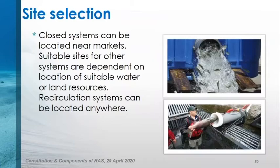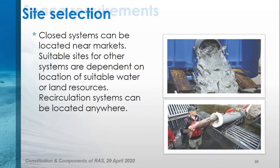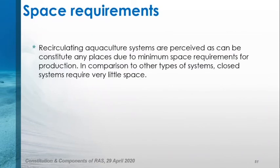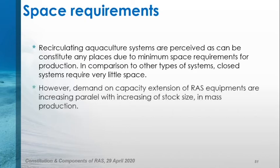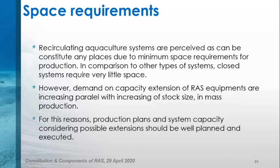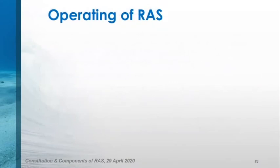For site selection: closed systems can be located near the markets, while suitable sites for other systems are dependent on location of water or land sources. However, recirculating systems can be located anywhere. Recirculating systems are perceived as being able to be established in any place due to minimum space requirements for production compared to other types of systems. Closed systems require very little space. However, demand on capacity and extensions of equipment increase parallel with stock size in mass production. For this reason, production plans and system capacity, considering possible extensions, should be well planned and executed from the beginning.